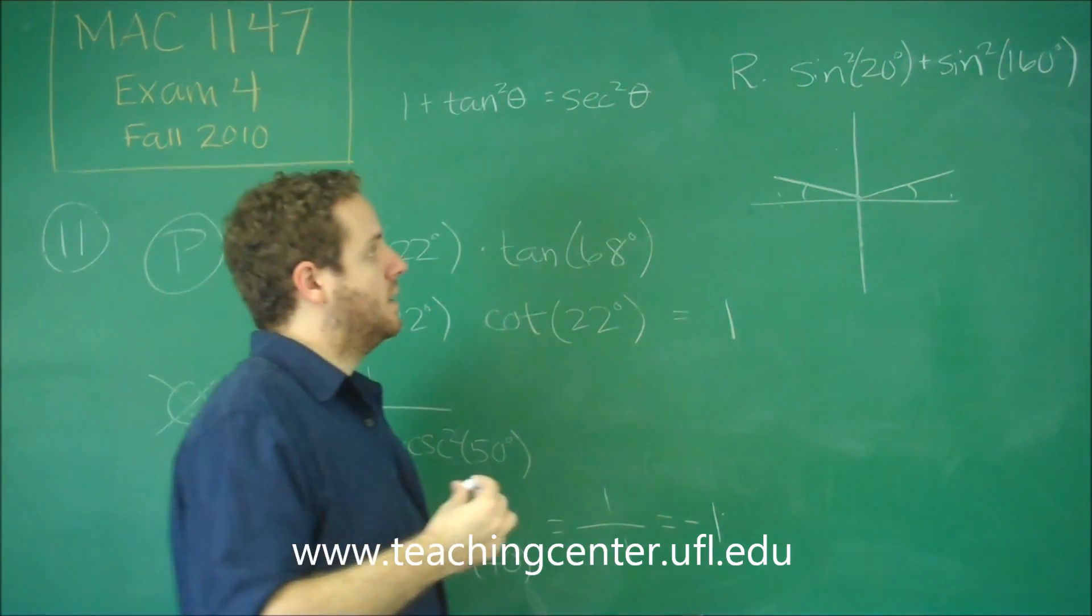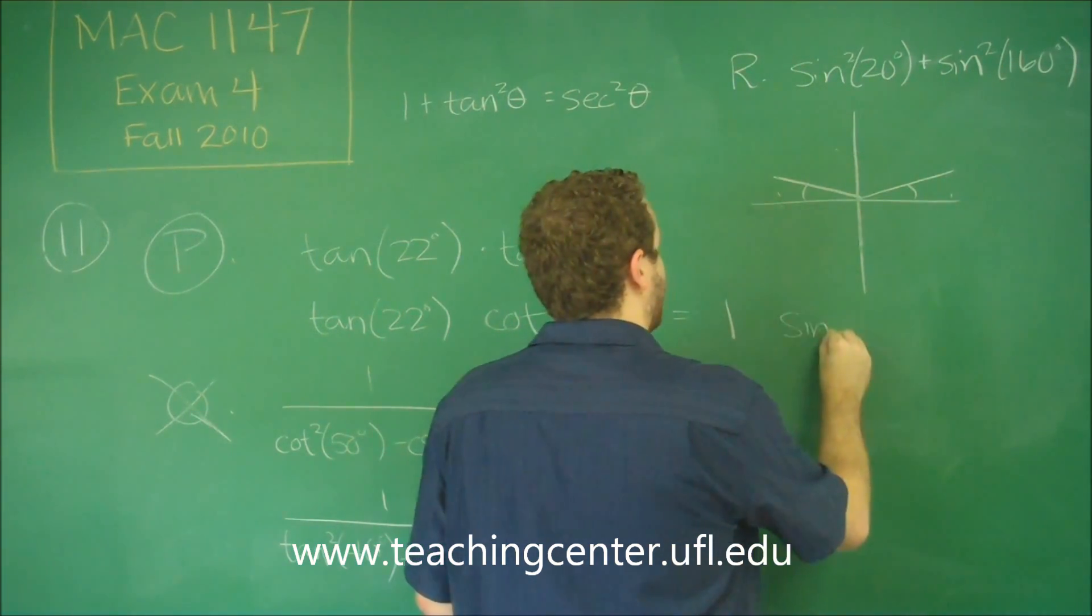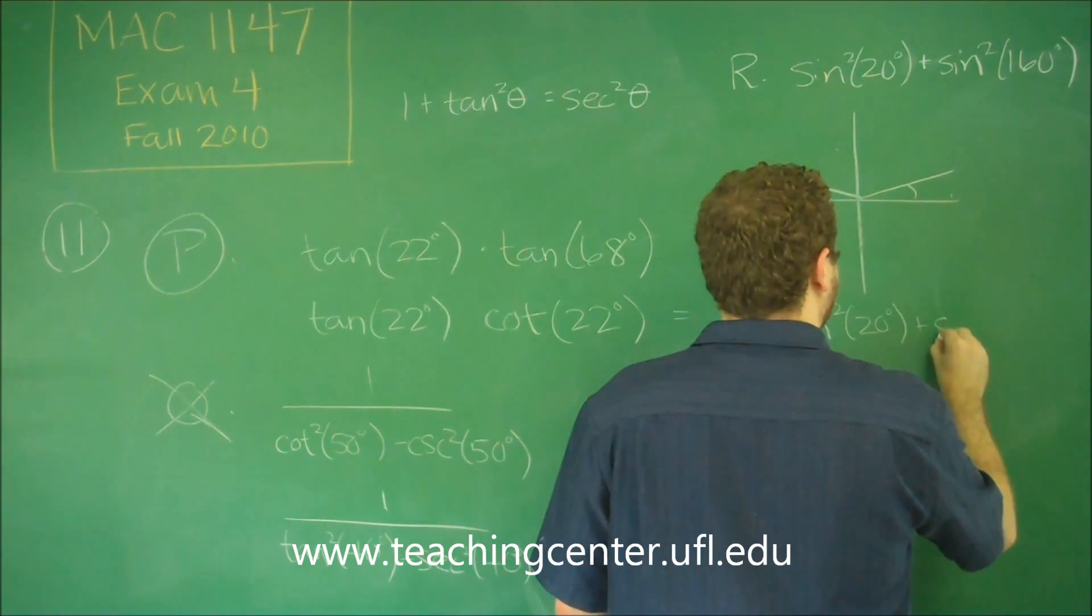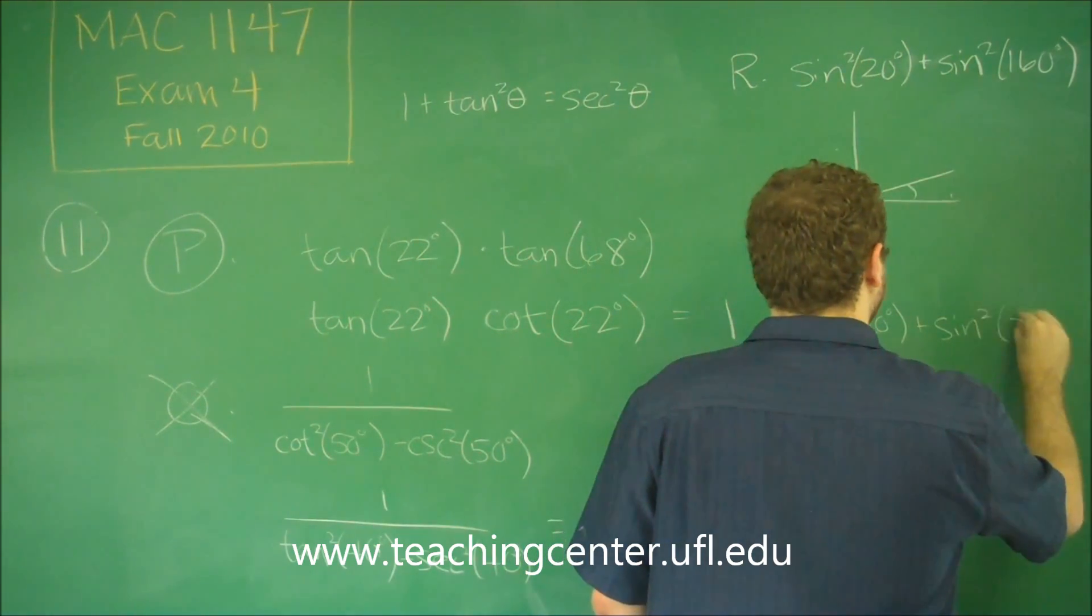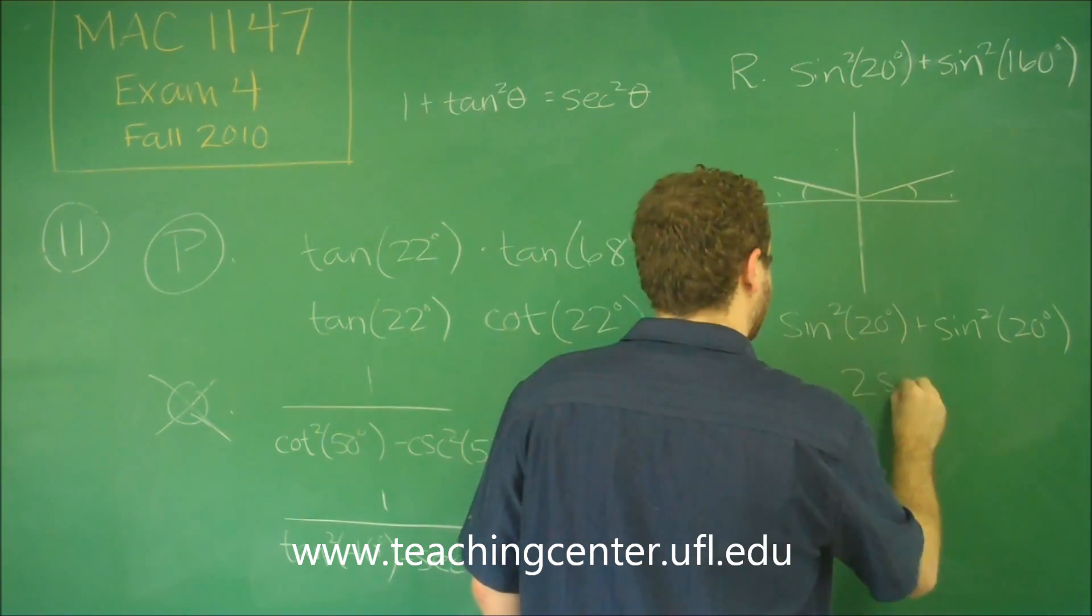So those two are actually the same thing, and they're not any particular number that you know, like 1 half. So really, we could just say they're both sine squared of 20. Which is just 2 sine squared of 20.